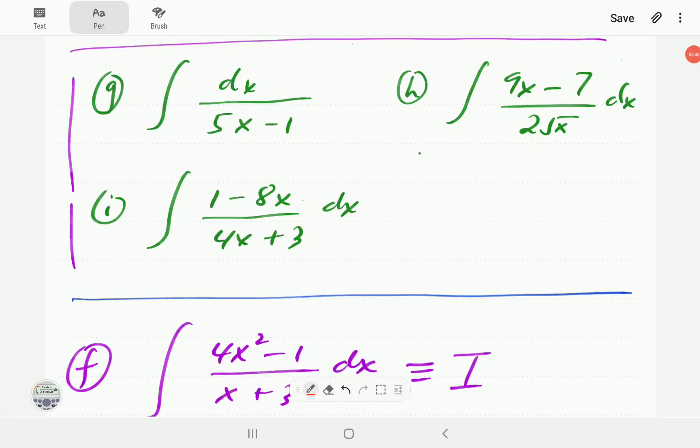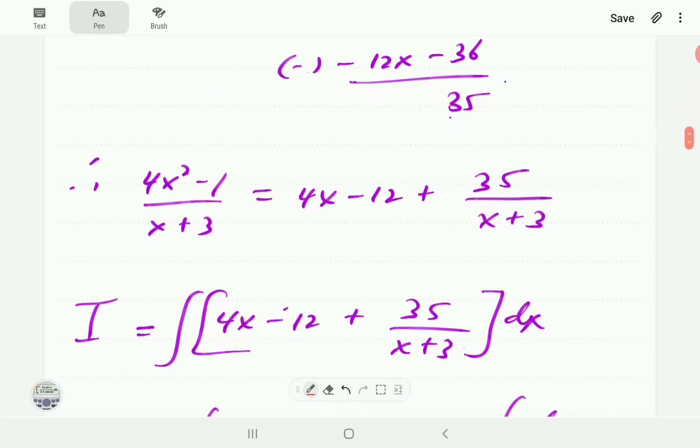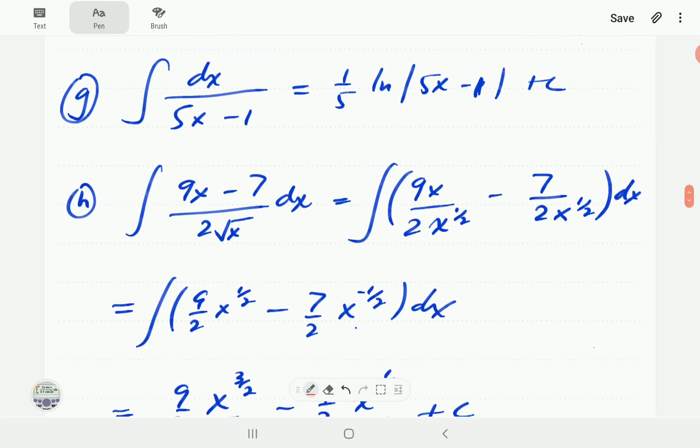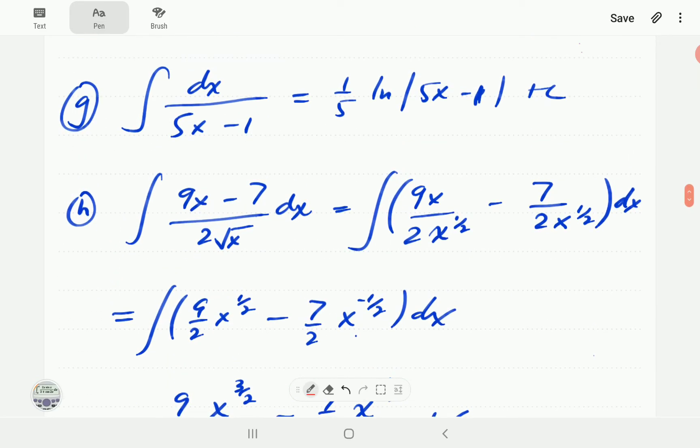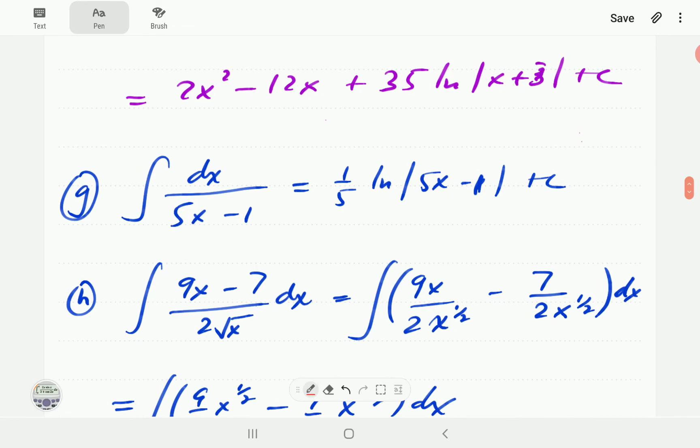We're now going to go through the examples g, h and i. For g we notice that this integral is in the form of ∫(ax+b)dx over (ax+b) which we said always integrates to that. So the main thing is the coefficient of x of which in this case it's 5, so we're going to have 1 over 5 ln of |5x - 1| plus C.